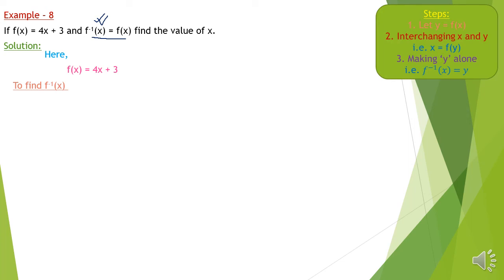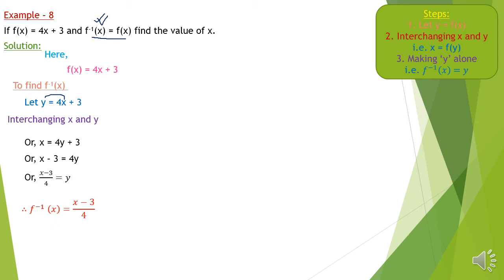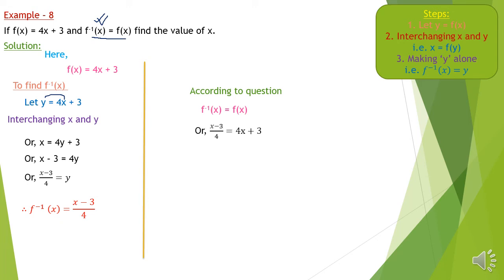Following the same steps shown on the top right corner: let y = 4x+3, then interchanging x and y: x = 4y+3. Making y alone: x−3 = 4y, so y = (x−3)/4. Therefore f⁻¹(x) = (x−3)/4. Now we have to use the given condition: f⁻¹(x) = f(x). Substitute both values: (x−3)/4 = 4x+3.